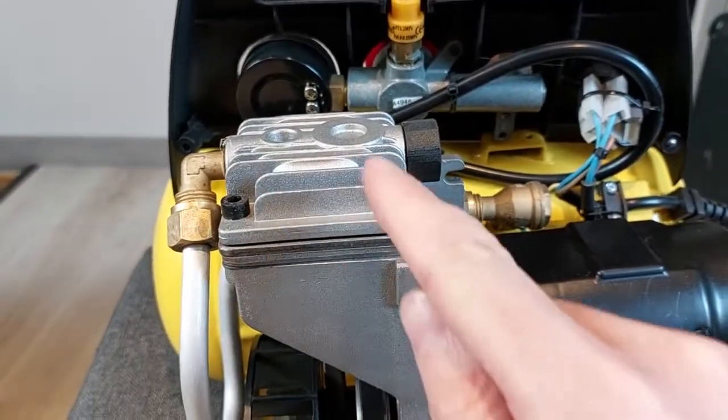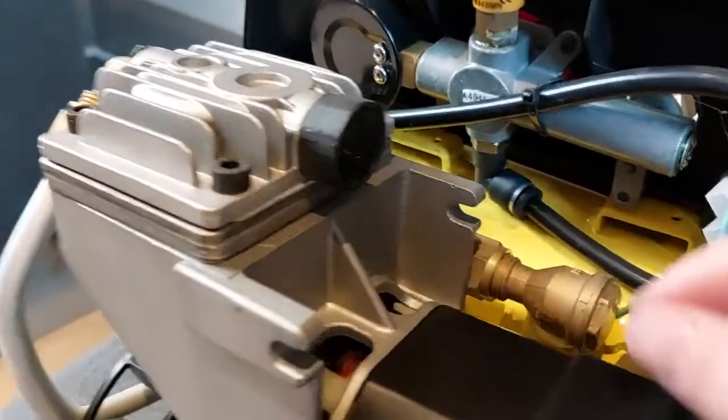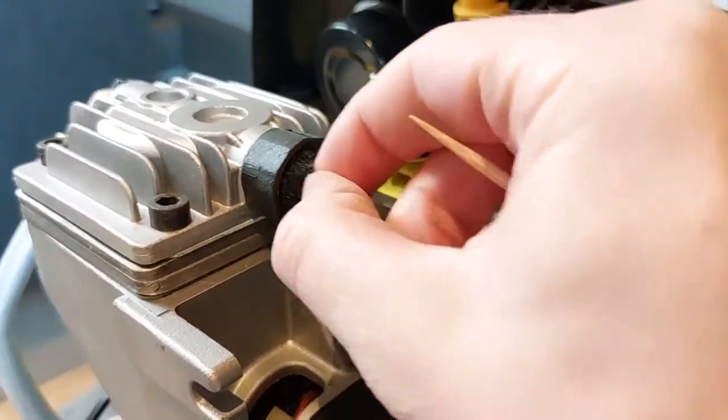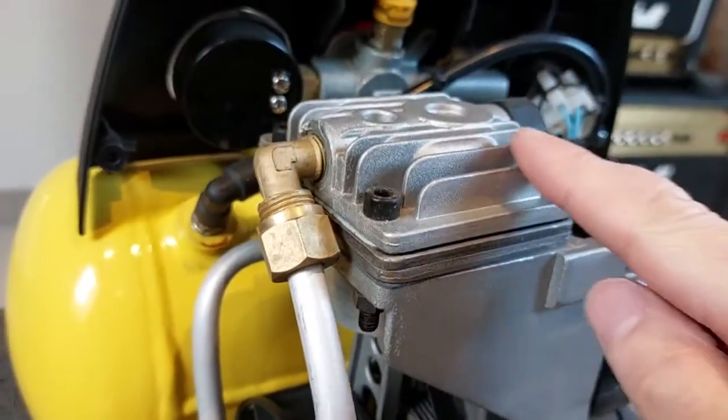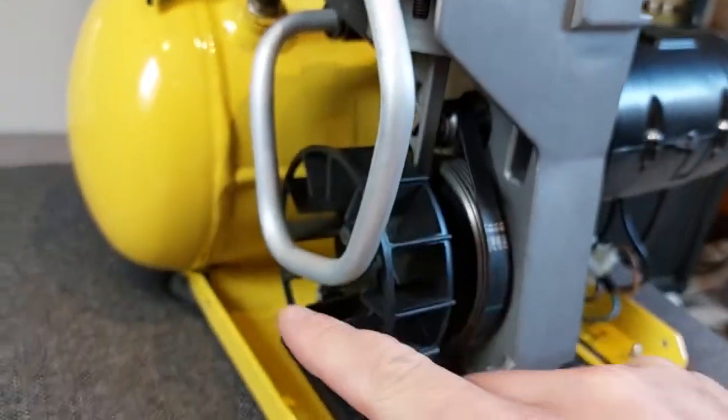This is the piston head. It takes in the air from the atmosphere through a small filter. The air is then compressed by the piston and pushed out through this metal pipe.